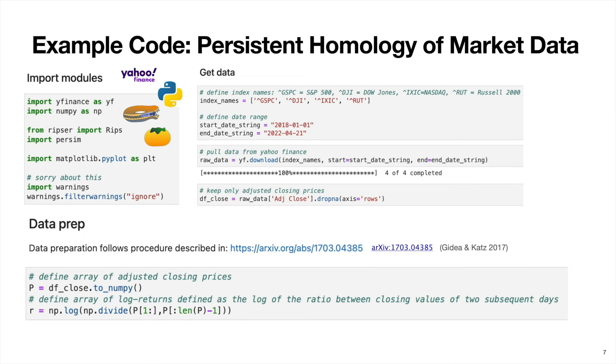Then we convert this pandas data frame into a NumPy array and compute the long daily returns of each index. And this choice of data prep follows the procedure used in the paper by Gidea and Katz, which was the inspiration for this example. And you can find it at the archive reference here.